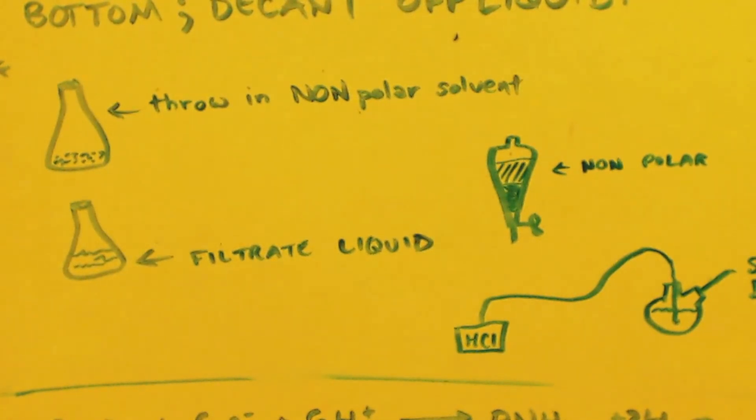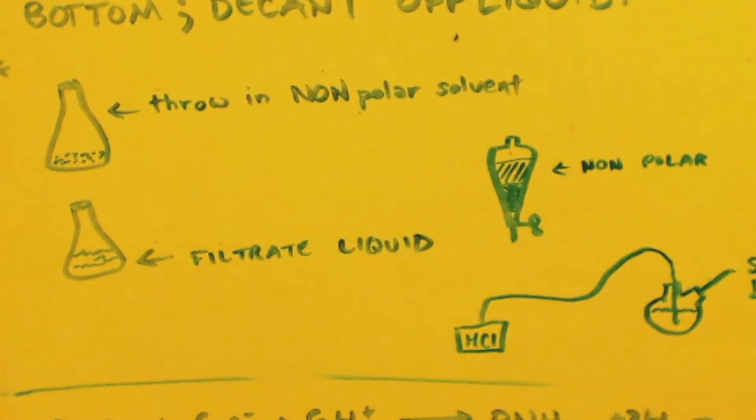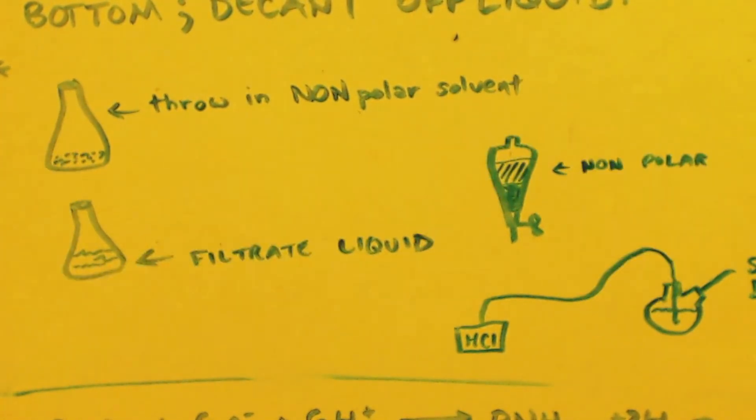It'll turn into methylamine hydrochloride. And it will precip out as a solid. And that's the only thing that's going to precip out as a solid. You can filter it, dry it, and you have a nice pure methylamine hydrochloride salt.